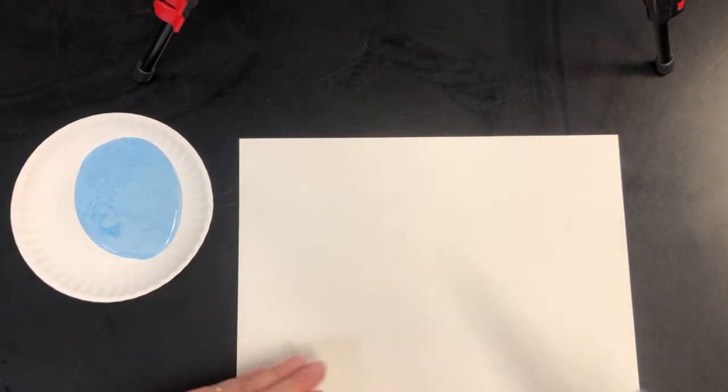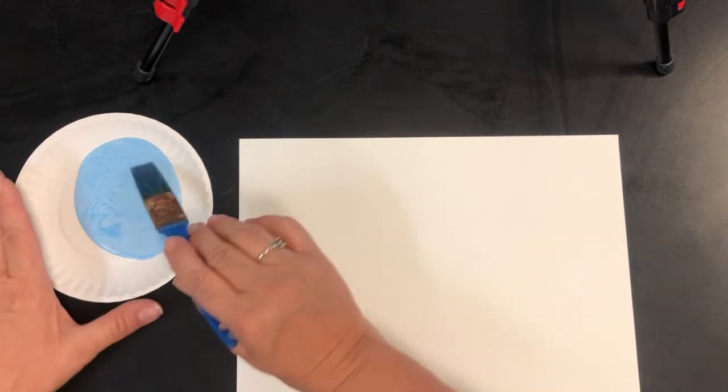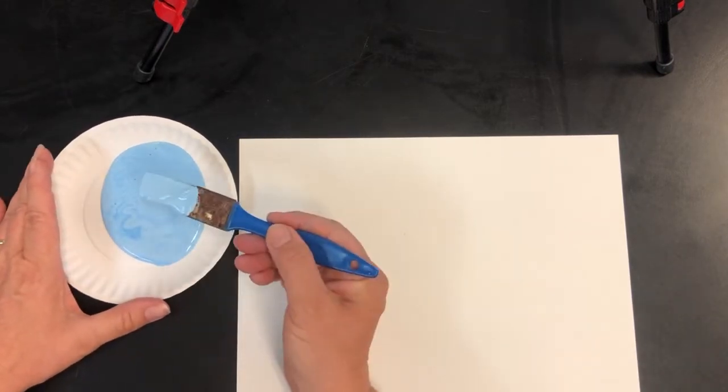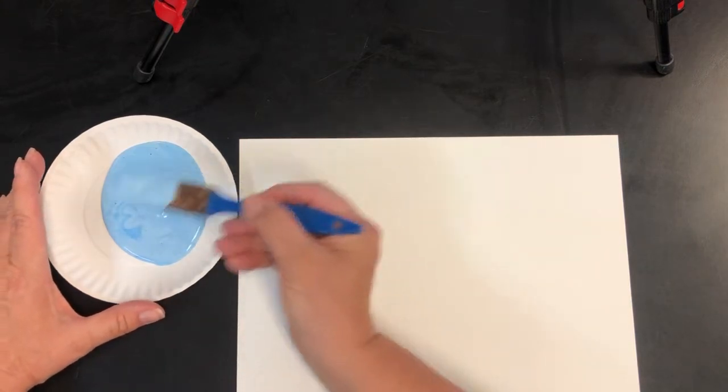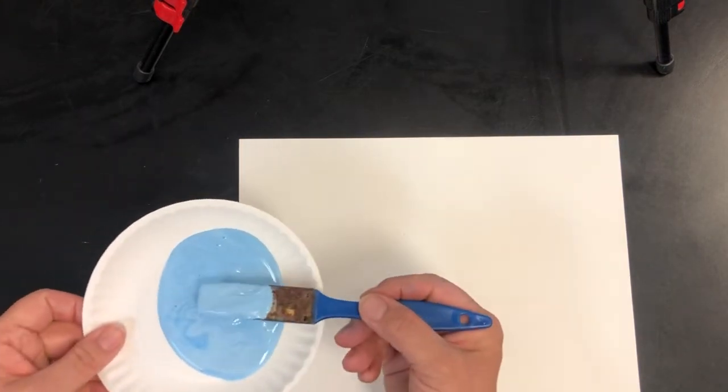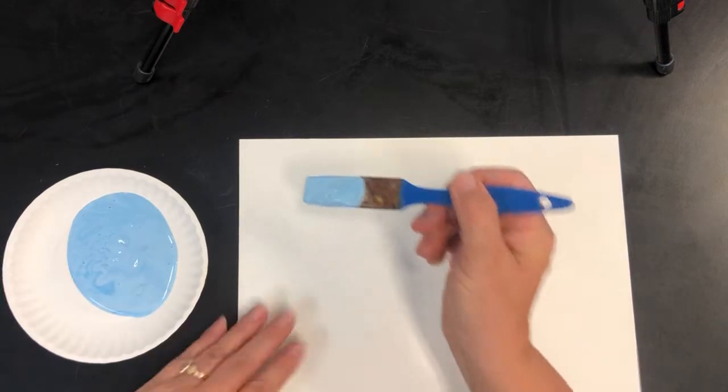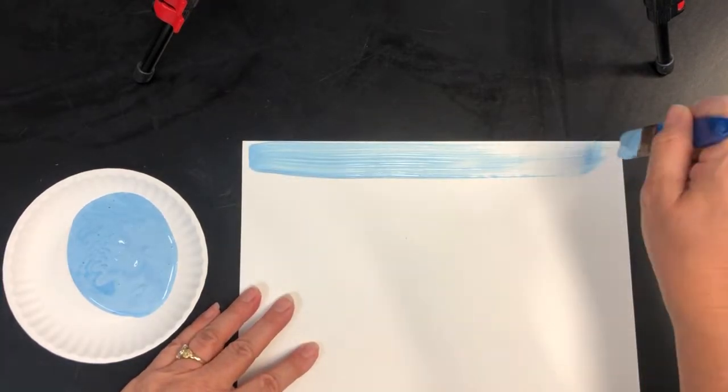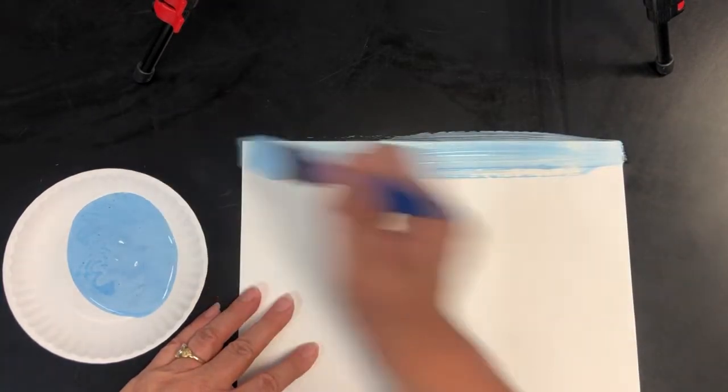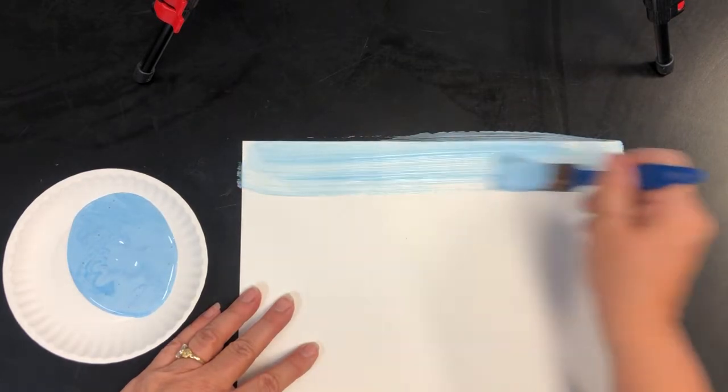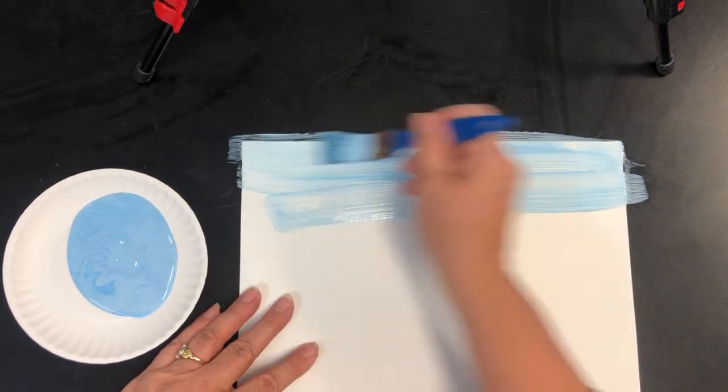Alright, so what I want you to do is take your brush and dip it in the paint. Don't stir it. Do not stir. Just dip, flip it over, and I want you to go all the way across and all the way back. Just keep going all the way across and back.